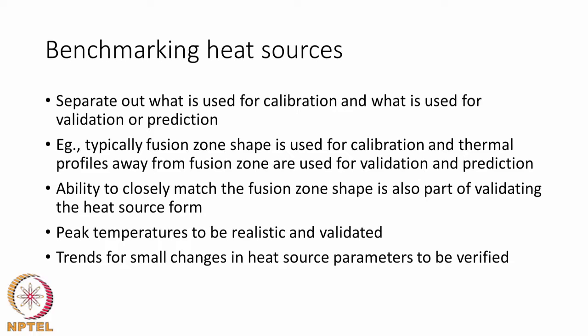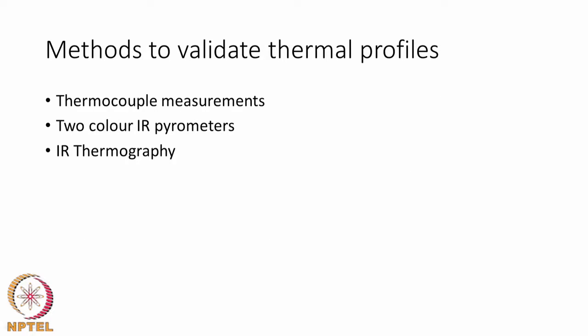When we make small changes in the heat source parameters, how the weld thermal profile changes is a trend that must be observed to confirm the heat source has been chosen correctly. The number of heat source parameters also limits the ability to systematically verify — for a double ellipsoid there are so many parameters that rigorous sensitivity analysis becomes difficult, whereas for a Gaussian it is trivial. There are three different ways to validate thermal profiles: thermocouple measurement, two-color IR pyrometer, and IR thermography.